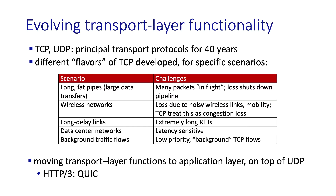We learned in Chapter 2 that pretty much since its inception, HTTP has been running over TCP. However, there's change afoot with a new version of HTTP — that's HTTP 3 — building a lot of transport layer capabilities at the application layer, and then running over UDP. Let's wrap up here by taking a look at this.